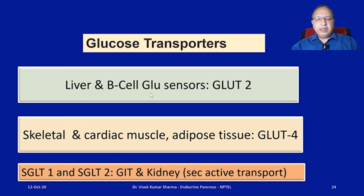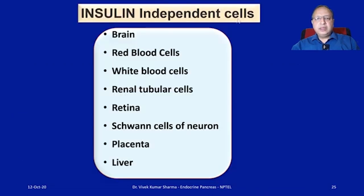GLUT4 is a special insulin-dependent transporter that mediates insulin-mediated glucose uptake in skeletal muscle, cardiac muscle, and adipose tissue. SGLT1 and SGLT2 (sodium-glucose co-transporters 1 and 2) are present in the gastrointestinal tract and kidney, increasing glucose absorption along with sodium via secondary active transport. Although most body tissues depend on insulin, some insulin-independent cells include brain, red blood cells, WBCs, renal tubular cells, retina, Schwann cells, placenta, and the liver.